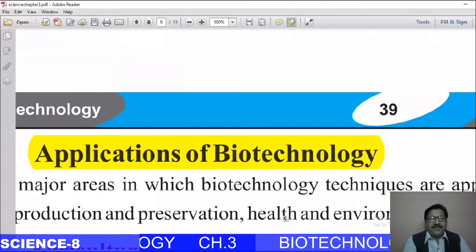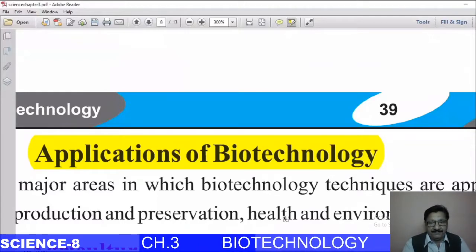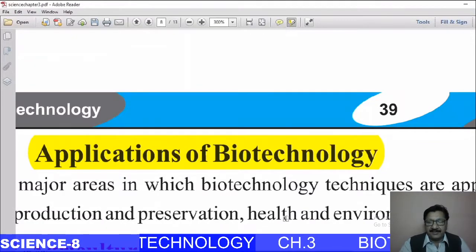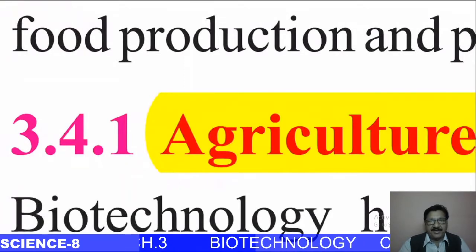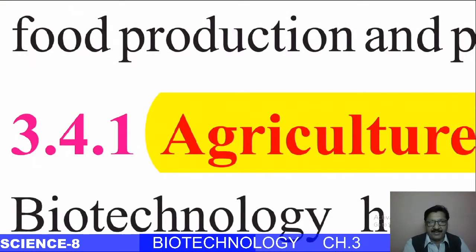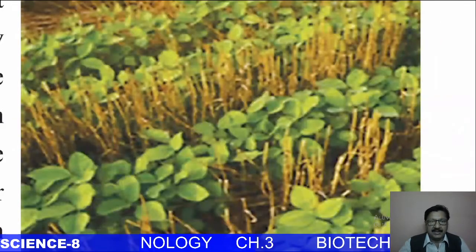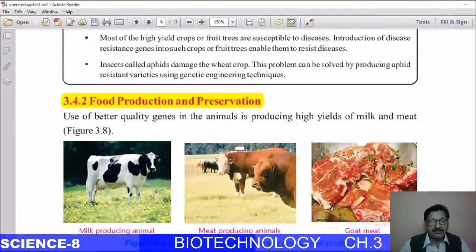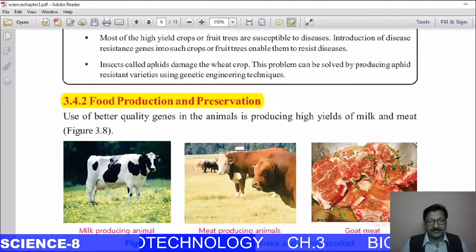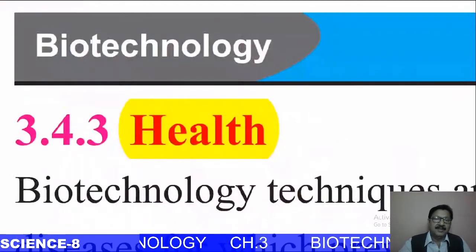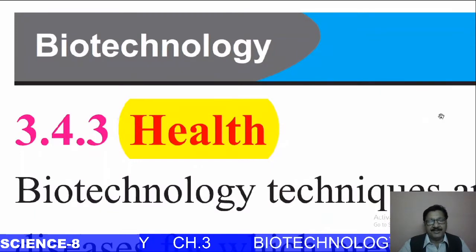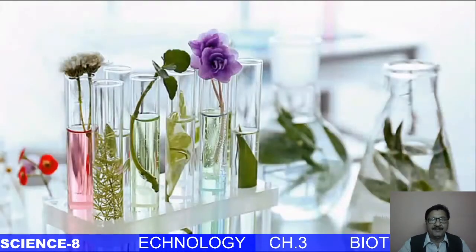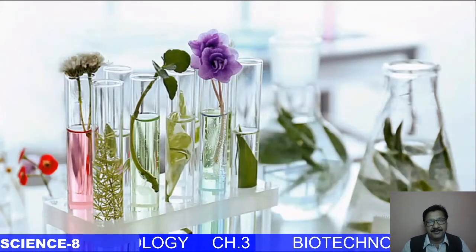Now we come to the applications of biotechnology. The first application is in the field of agriculture — plants are developed and grown with the help of biotechnology. Similarly, animals are developed for more milk and more food. Secondly, our health is treated with biotechnology, and other techniques are also used, as you can see in the diagram.